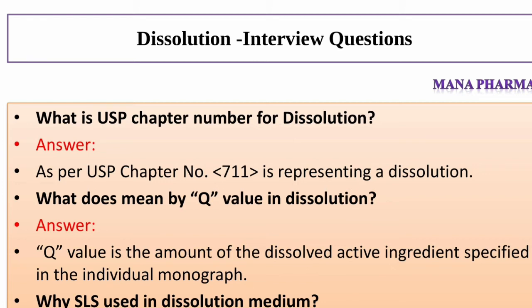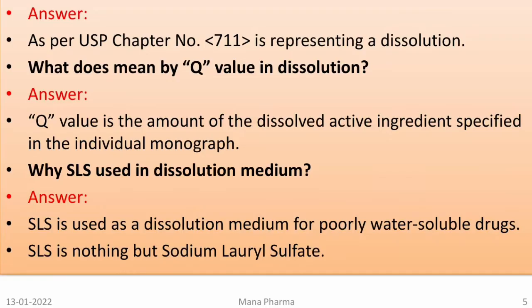What does Q value mean in Dissolution? Answer: Q value is the amount of the dissolved active ingredient specified in the individual monograph. Why is SLS used in Dissolution media? Answer: SLS is used as a Dissolution medium for purely water-insoluble drugs. SLS stands for sodium lauryl sulfate.